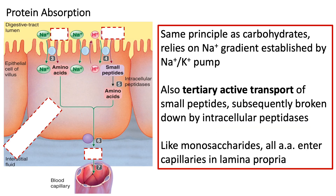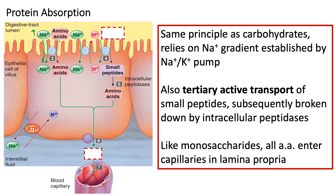Protein absorption is similar to carbohydrate absorption in that it relies on the sodium-potassium ATPase pump to establish a high sodium concentration outside the cell. Via secondary active transport, sodium moving down its concentration gradient pulls an amino acid along with it. Small peptide fragments can also move into the cell via tertiary active transport — sodium moves in down its gradient and hydrogen moves out, powering peptide movement inward. Once in the cytosol, those peptides are broken down by intracellular peptidases into individual amino acids, which exit the cell via facilitated diffusion and enter the capillaries within the lamina propria.